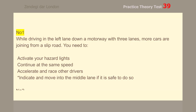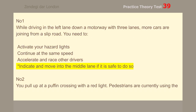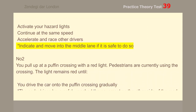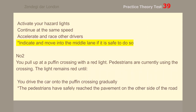Number 1. While driving in the left lane down a motorway with three lanes, more cars are joining from a slip road. You need to indicate and move into the middle lane if it is safe to do so.